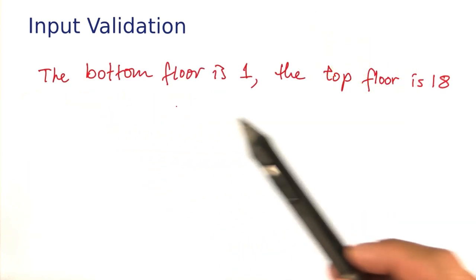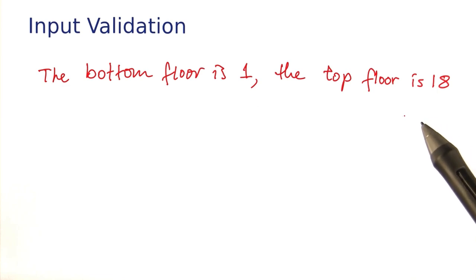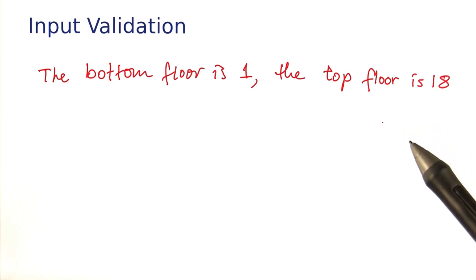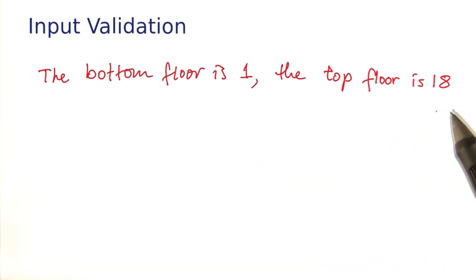The next rule is that the bottom floor is 1 and the top floor is 18. So if the user enters a number that is less than 1 or greater than 18, we want to reject that.